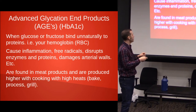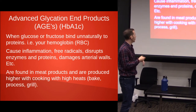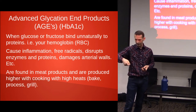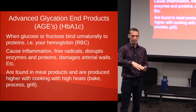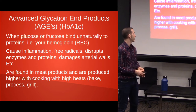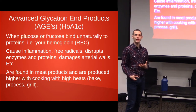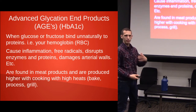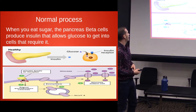Where are AGEs found? They're found in meat products and they're produced with higher cooking temperatures — if you're grilling something or producing a lot of heat. Animal products have a lot of AGEs inside of them in general, and we're going to talk about animal products a lot in this talk.